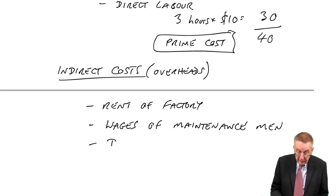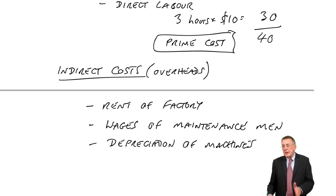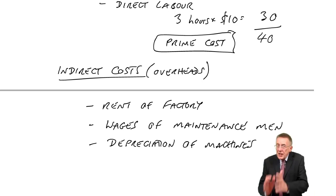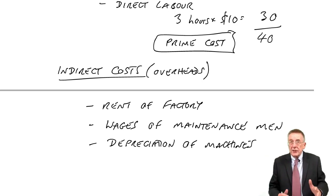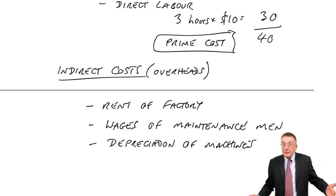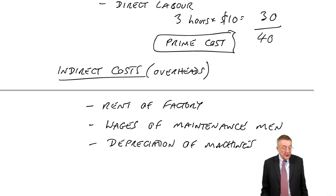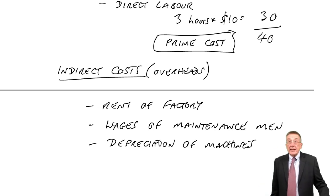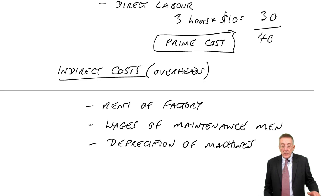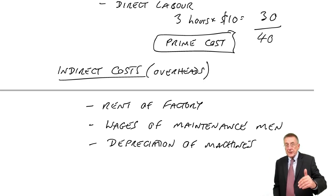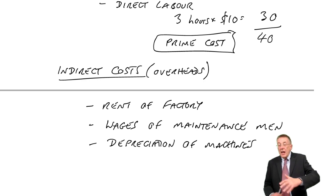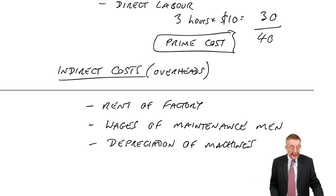Another one, depreciation of machines. Now, don't worry too much if you're not familiar with the word depreciation, because it's really paper F3, but I think you've probably heard of it. But since it's machines in the factory, it's a cost of production, but it's indirect. You can't measure it in each unit. So only examples there. But we say the cost of production with those two types, direct costs, primarily materials and labour, and all the other factory costs, the indirect or the overheads.